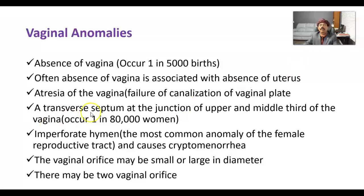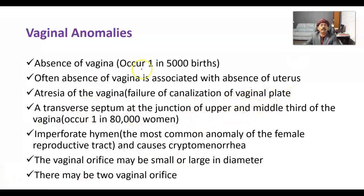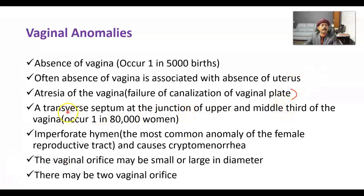Atresia of the vagina results from failure of canalization of the vaginal plate, which forms from fusion of the sino-vaginal bulbs. A transverse septum at the junction of the upper and middle third of the vagina may also occur, seen in approximately 1 in 80,000 women.